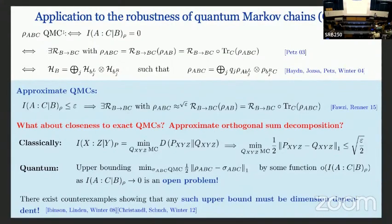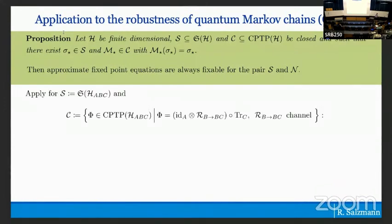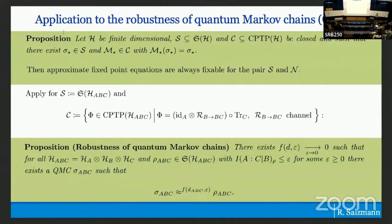Because I have this approximate fixed point equation, I can essentially apply the result on fixability I mentioned before — for general states on the tripartite Hilbert space and channels of the specific recovery form. By that I find a first application: robustness of quantum Markov chains. Whenever I have an approximate quantum Markov chain rho_ABC with small conditional mutual information, I find an exact quantum Markov chain sigma_ABC close to it, where the approximation function decays to zero as epsilon goes to zero. However, since the result still relies on compactness, I don't have explicit control on this function F — it is rather implicit.